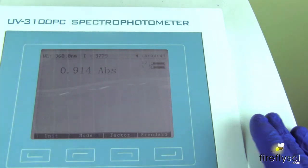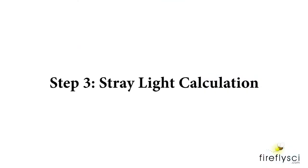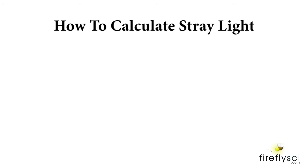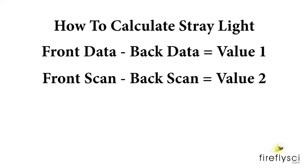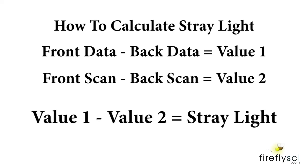And now let's go over how we calculate stray light with these two values. So we need two sets of values to calculate stray light. Value one is determined from the data on the certificate of calibration. So we take the front data and subtract it from the back data and this will give us the first value we need and we'll call it value one. Value two, we take the readings from the front and back scan that we just took. We have to subtract value one from value two and this will give us the stray light for our machine.